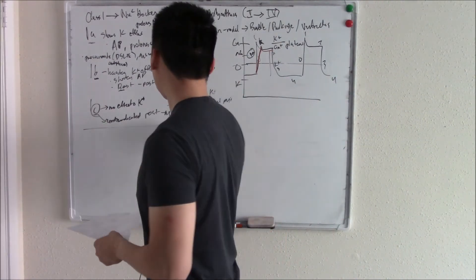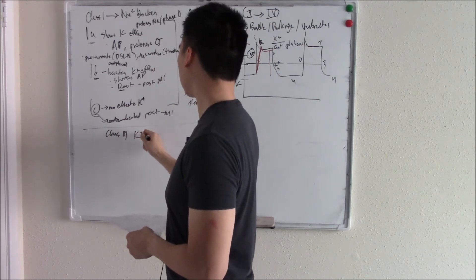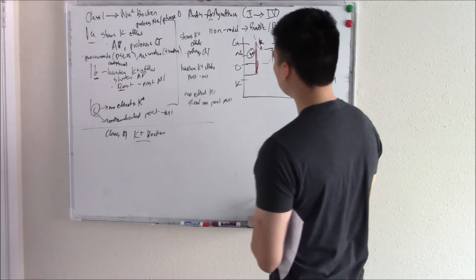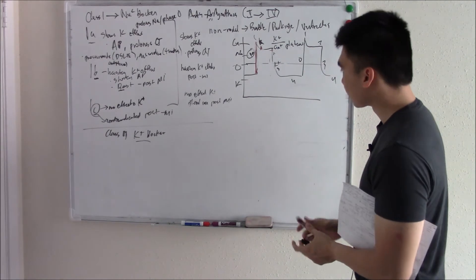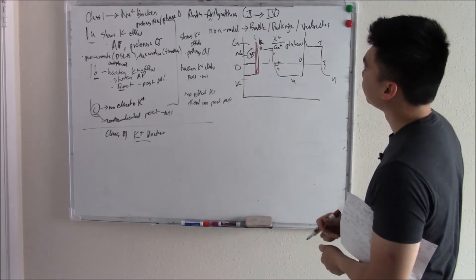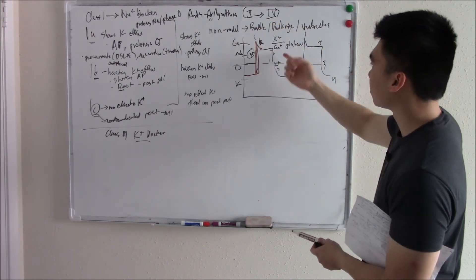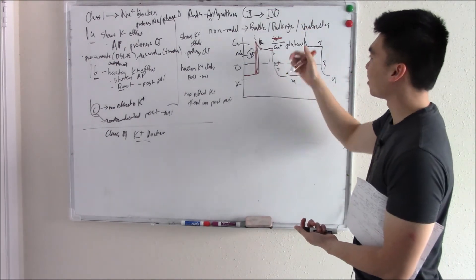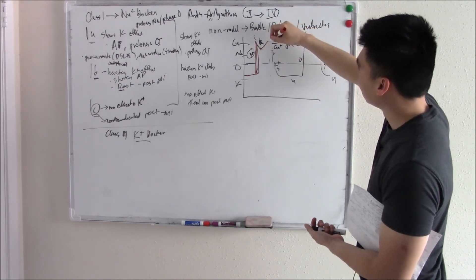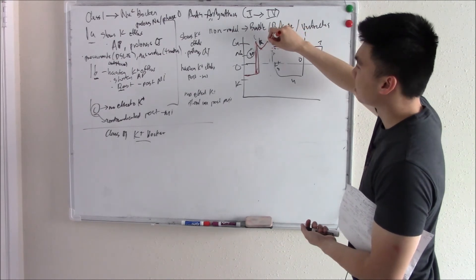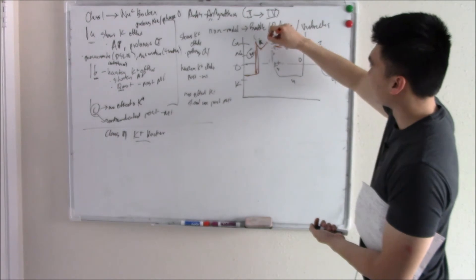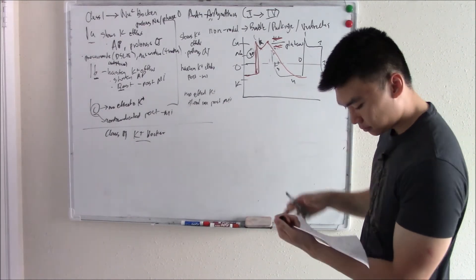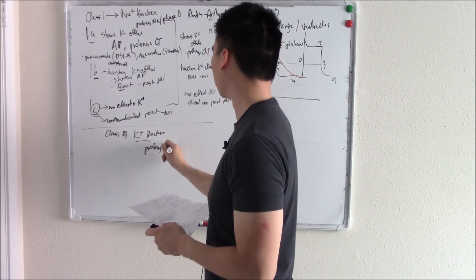That's class one. Class three are your potassium channel blockers proper — drugs that strongly work on your potassium channel. They don't affect your sodium channel, so sodium phase zero looks the same. When you block potassium, you lose the plateau balance — you just have calcium pulling things up. Eventually calcium closes, but now potassium efflux is slowed, prolonging repolarization. So class three prolongs the action potential and QT interval.